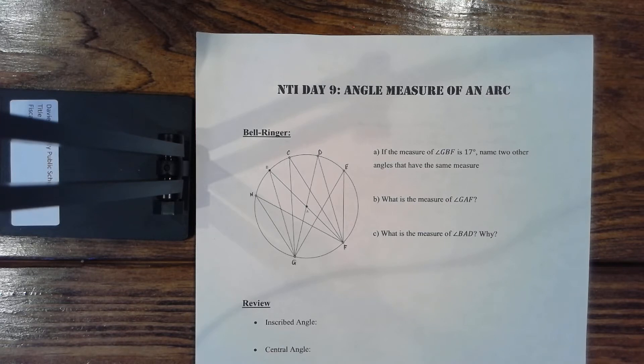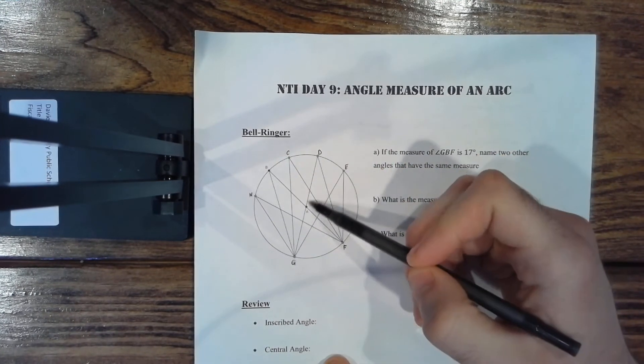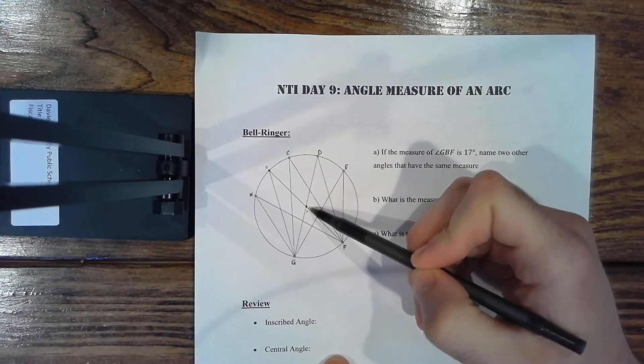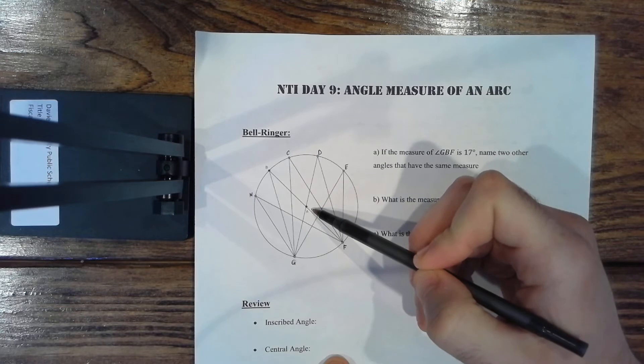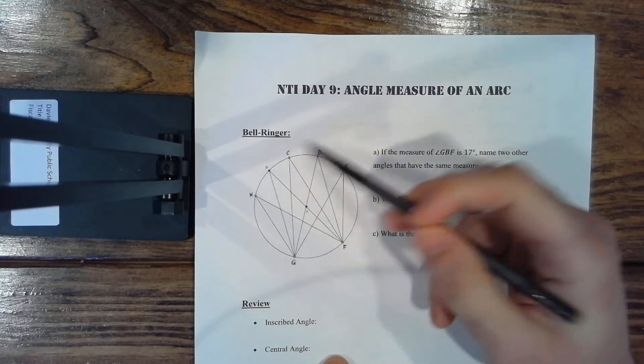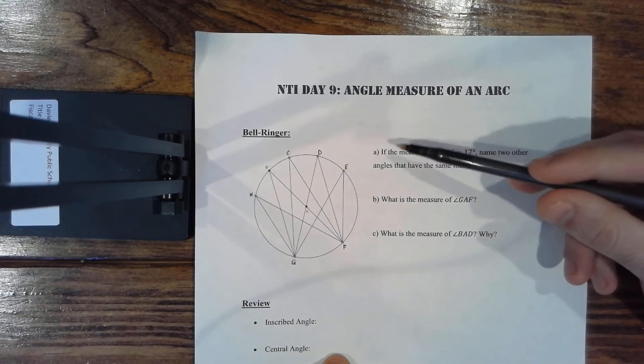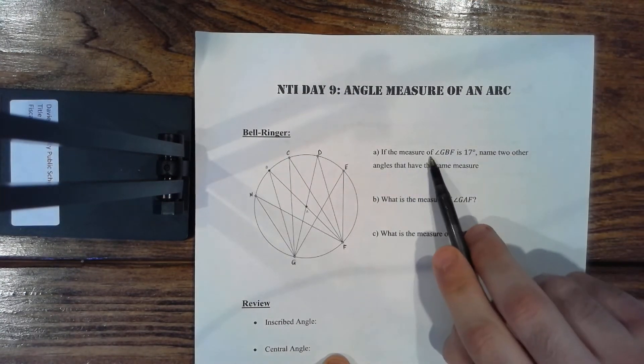So let's just start with the bell ringer. We have this circle and you can see all these different points in the circle. You have point A at the very center, so A is the center of the circle. Then you have G, H, B, C, D, E, and F. These are all points on the circle.